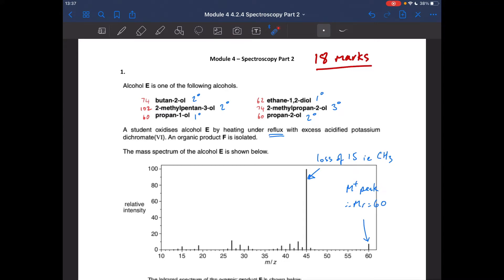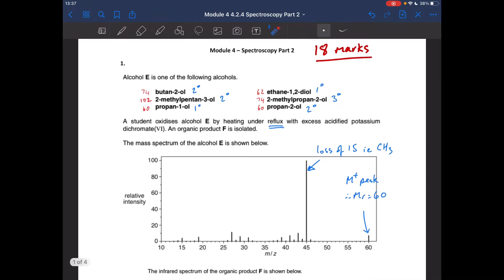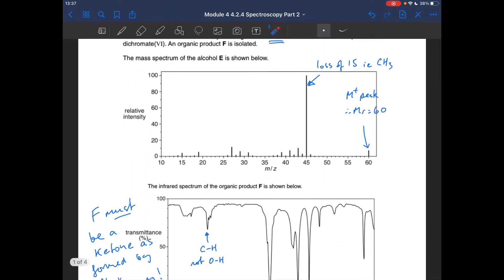Okay, so the alcohol E is heated under reflux with the oxidizing agent excess acidified potassium dichromate(VI), and organic product F is isolated. The mass spectrum of E is shown, and the infrared spectrum of F is shown.